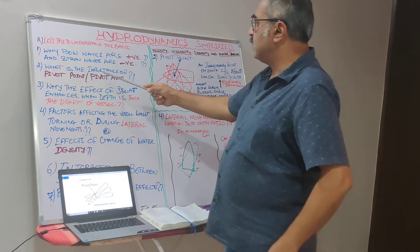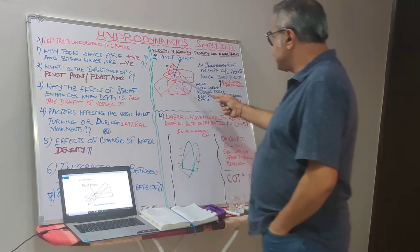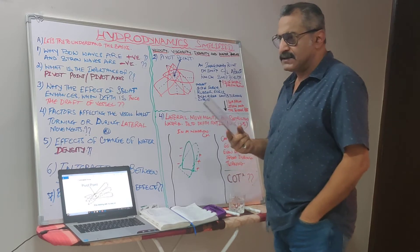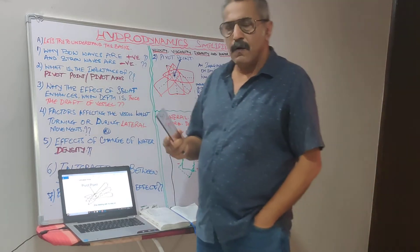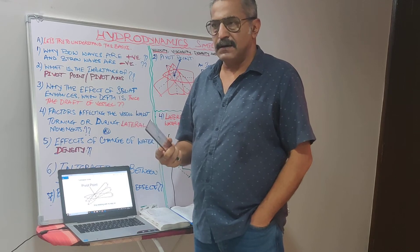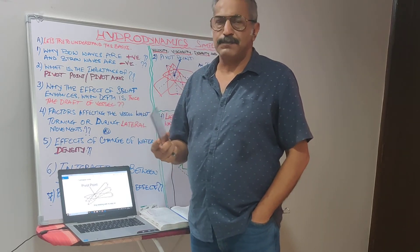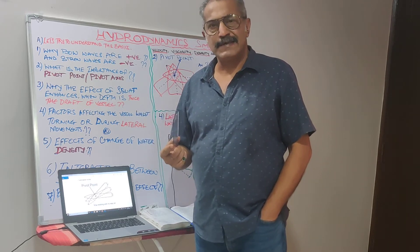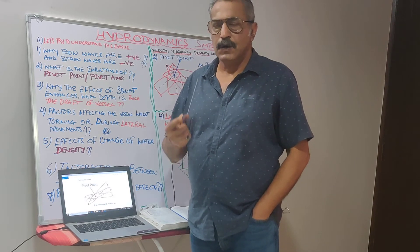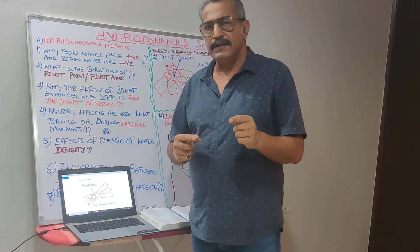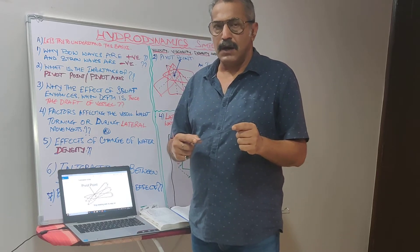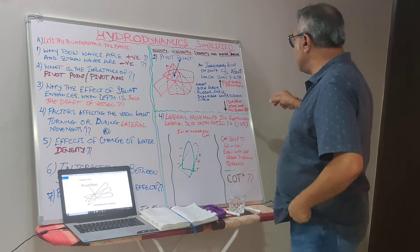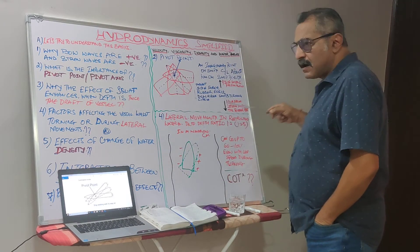Coming back to point number two, I have made some pictorial representations. When we talk about the pivot point or pivot axis, it is certainly an imaginary point on the vessel. When the vessel is on headway, it's approximately one third of the length from the ship's bow. When the vessel is at rest, it's almost at the center, coinciding with the center of gravity and the center of buoyancy.